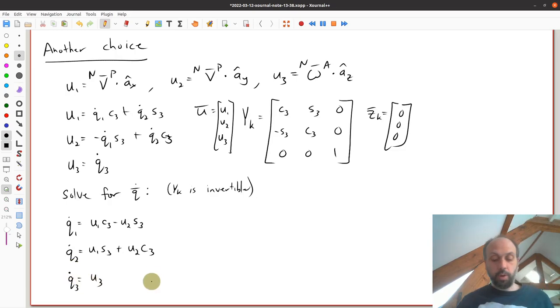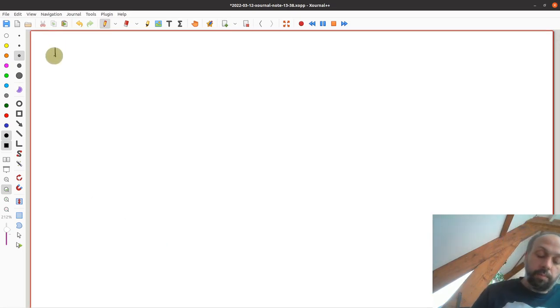So I can solve these equations. I defined my generalized speeds here. And then I can invert that Yk matrix and solve for the q dot. So I have a valid choice of generalized speeds. And then the final note here is, in practice, choosing the u's, the generalized speeds...